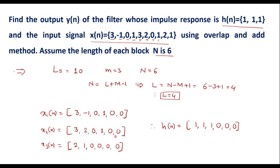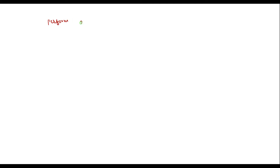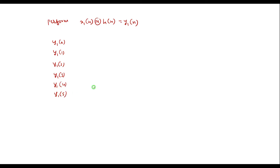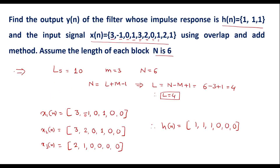Now perform x1[n] circular convolution with h[n] using the matrix method. I will call the result y1[n]. Writing y1[n] in matrix form: y1[0] through y1[5], since N equals 6. The x1[n] sequence 3, -1, 0, 1, 0, 0 is written vertically as a column.